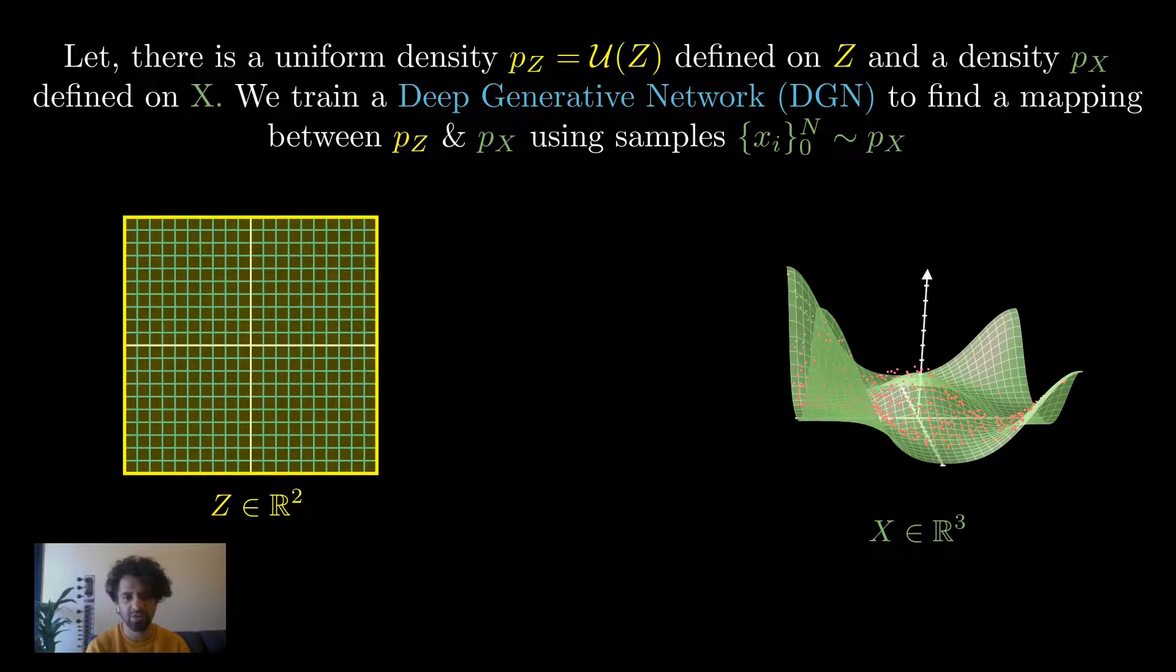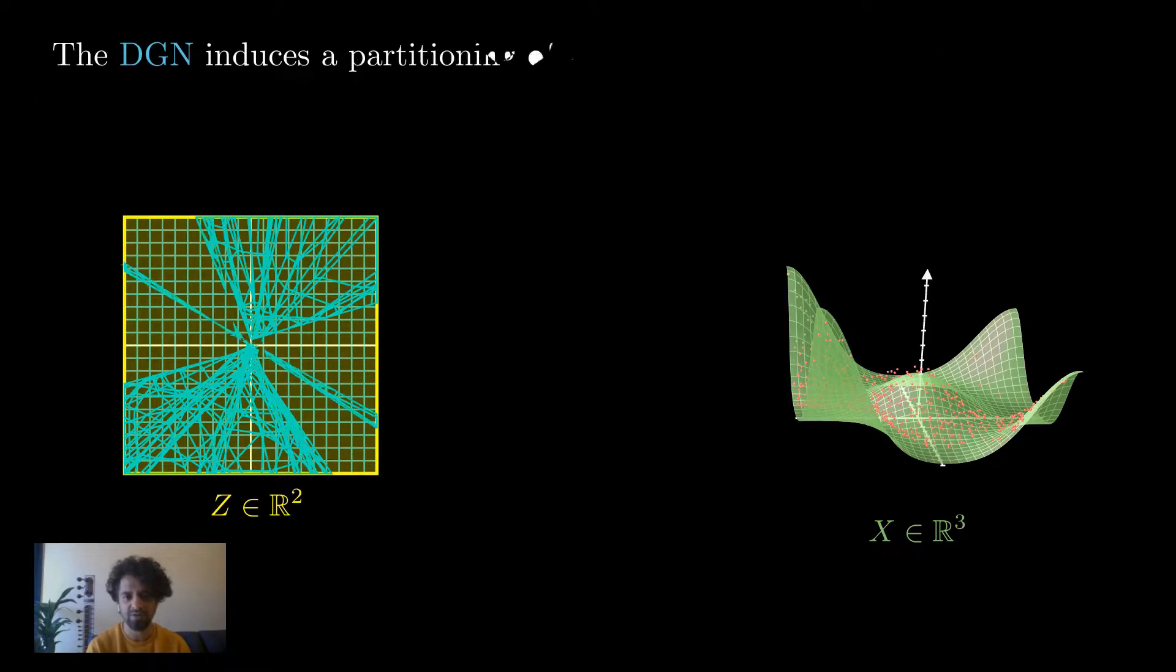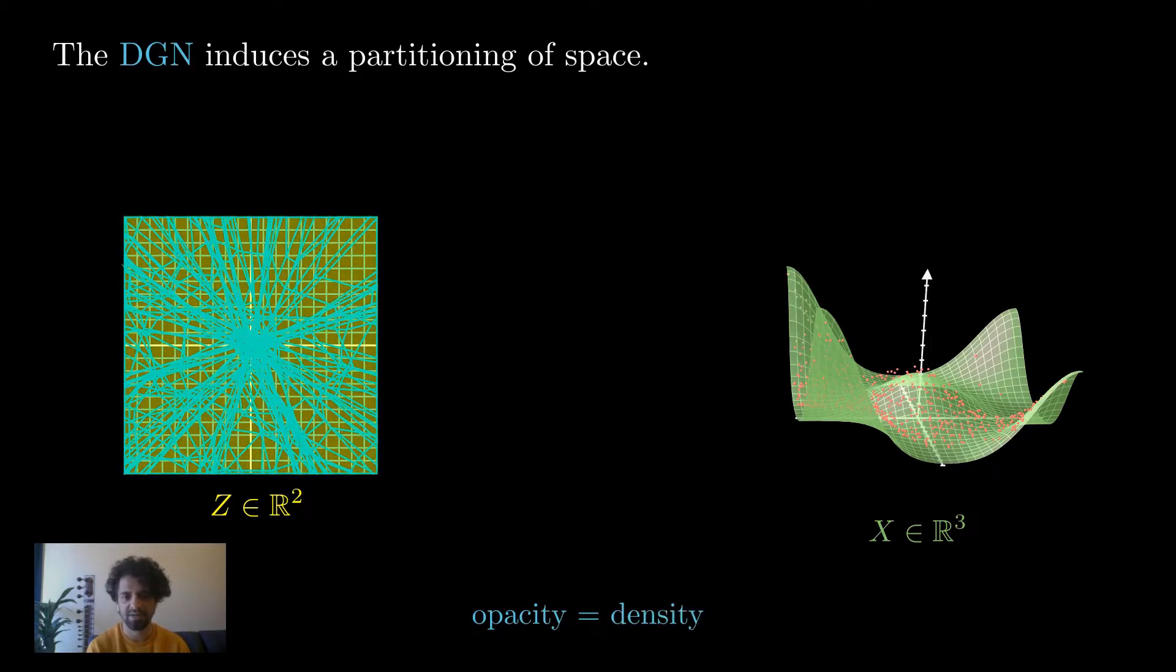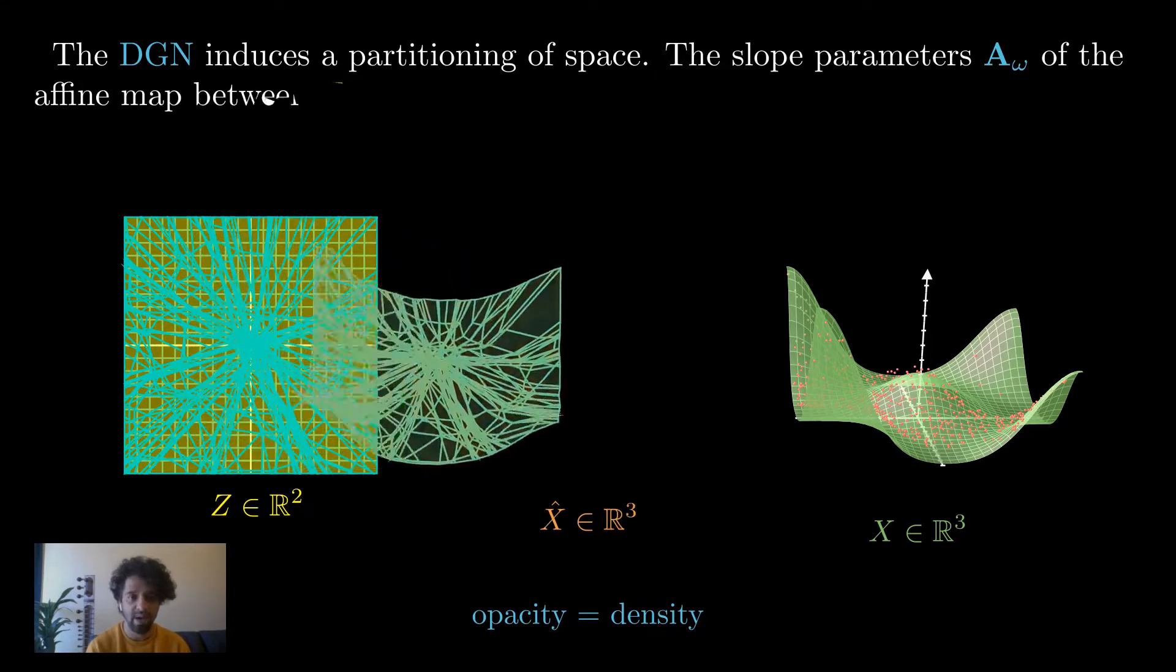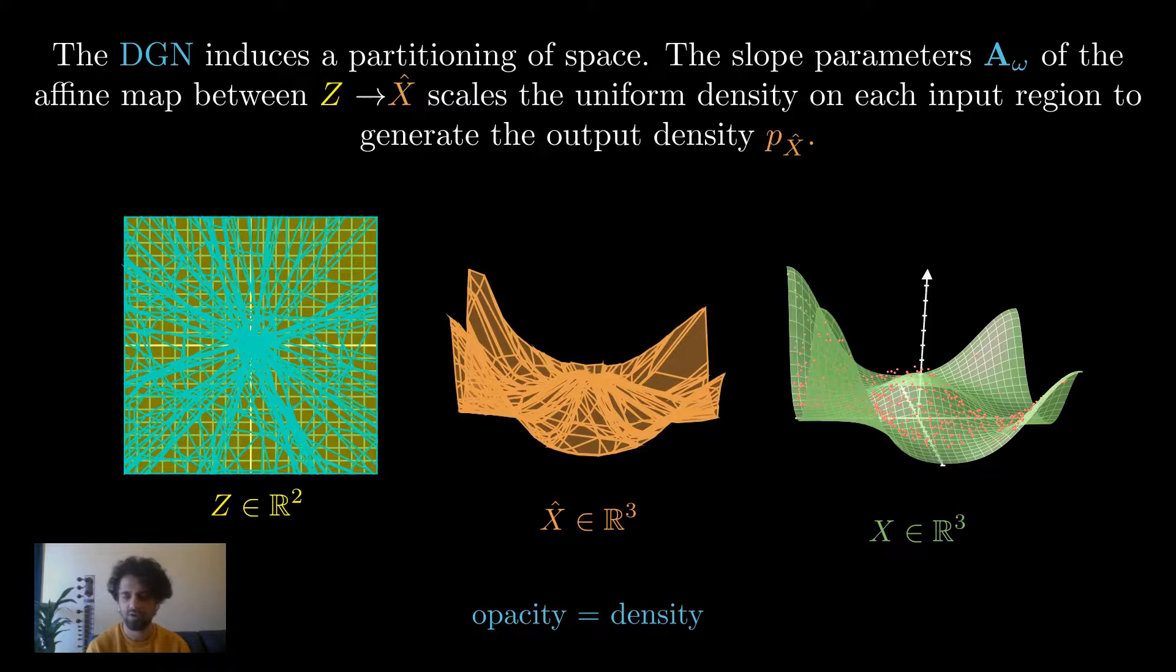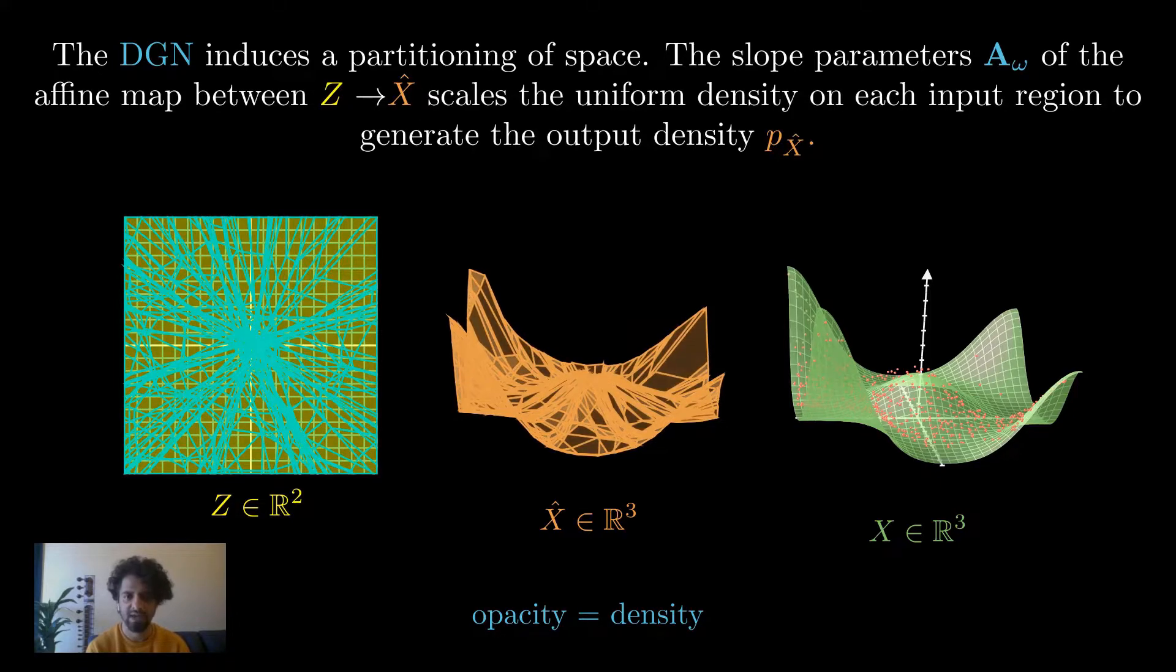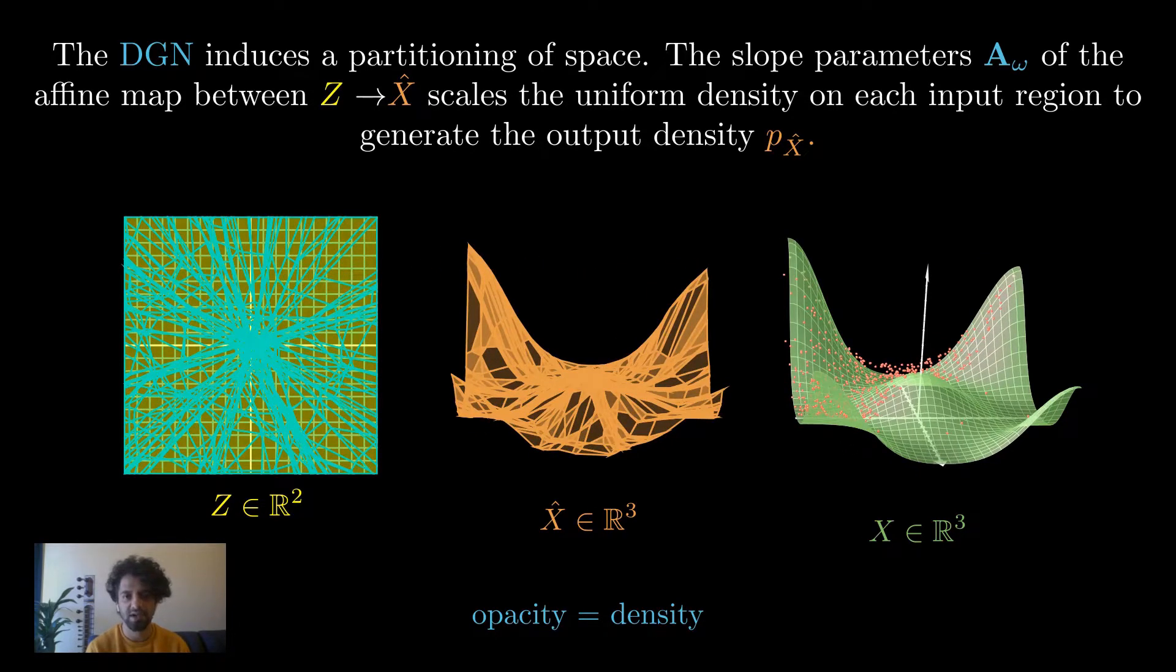The DGN is trained on this data and it would also induce a partitioning of space like before that will map each region in z to regions of an estimated manifold x_hat via per-region affine parameters.